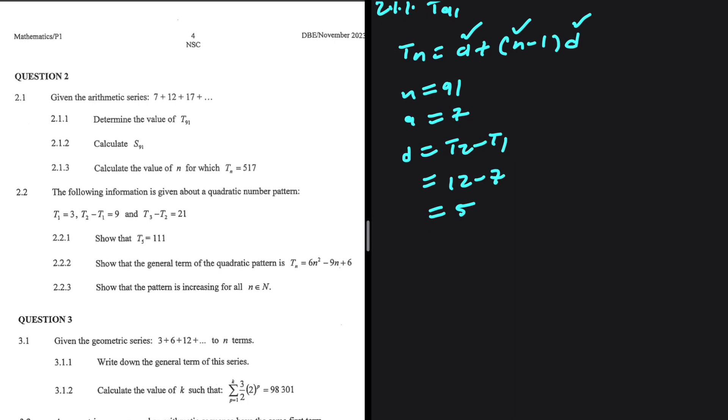So let's go ahead and substitute. We're going to have T91 being equals to A, which is 7 plus N minus 1, 91 minus 1 multiplied by the common difference, which is 5. So we have 90 multiplied by 5 plus 7, which equals 457. So we have 457 as the value of T91.